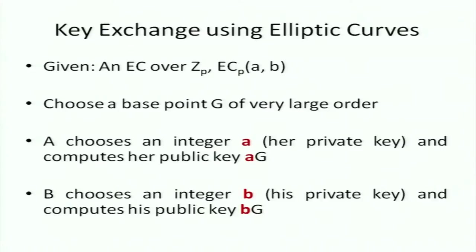The discrete log problem over well-chosen elliptic curves is infeasible. This is Diffie-Hellman key exchange over elliptic curve groups. The points on an elliptic curve form a group — that's why we defined groups before, because we cannot understand discrete logarithm without defining a group. The identity element is that special abstract element 0. The discrete log problem on well-chosen elliptic curves is infeasible.